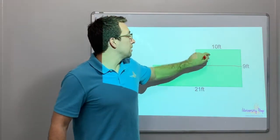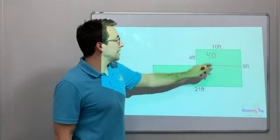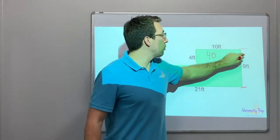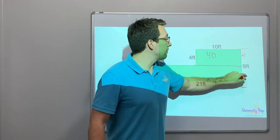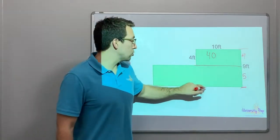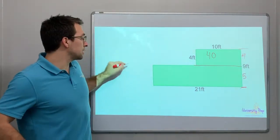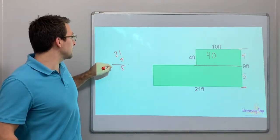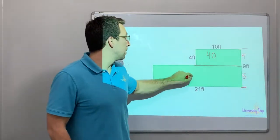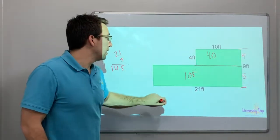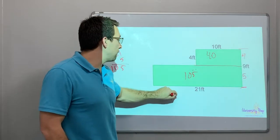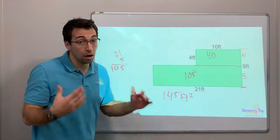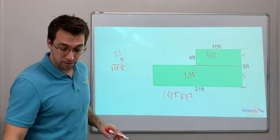4 times 10 is 40. And this is 9 feet from top to bottom, and this is 4 feet. So 4 plus 5 is equal to 9. What's 21 times 5? That's 105. 5 times 1 is 5. 5 times 2 is 10. 105. So combined, our answer is 145 feet squared. That's the area of this irregular shape.